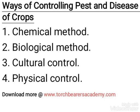Ways of controlling pests and diseases of crops: One, chemical method. Two, biological method. Three, cultural control. Four, physical control.